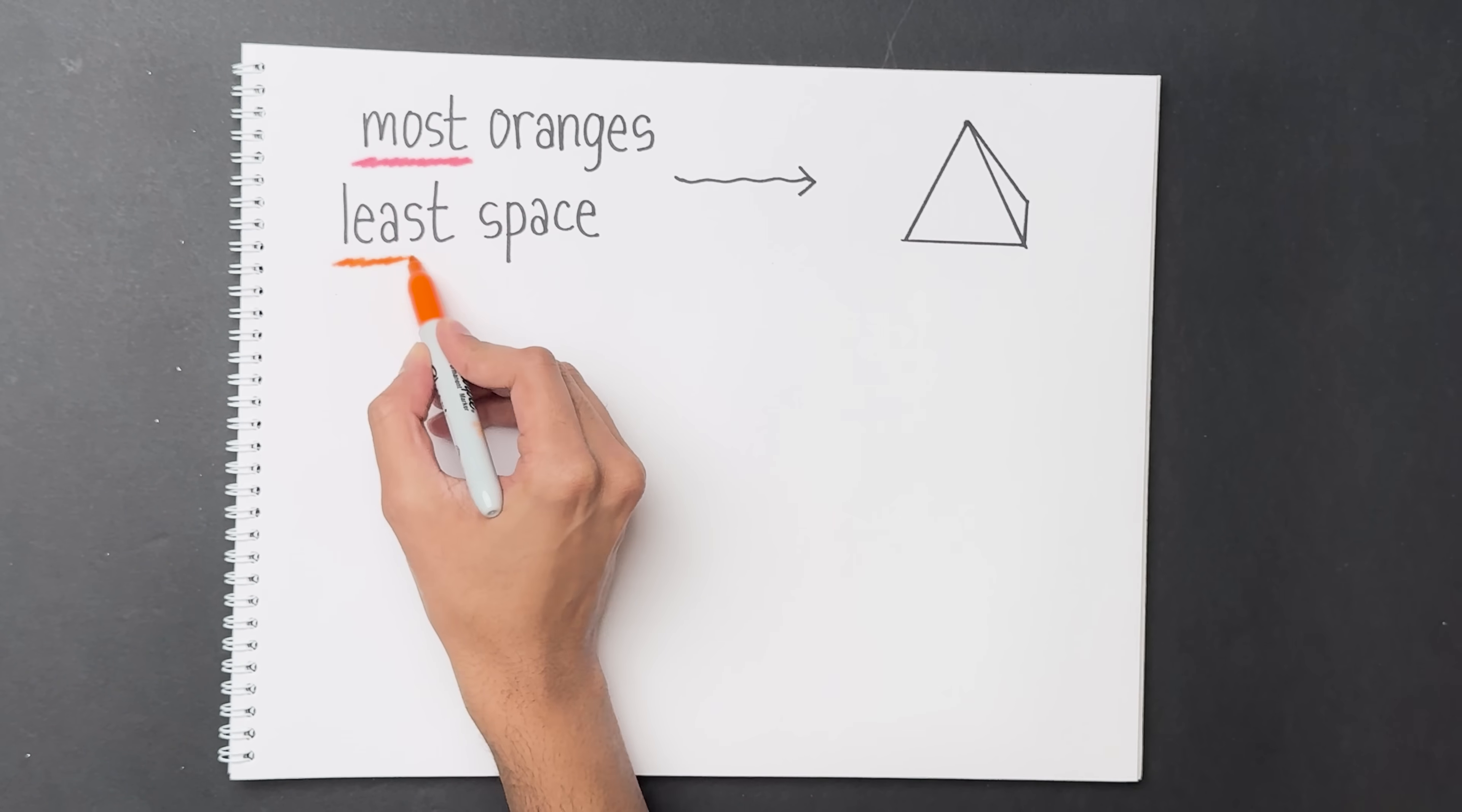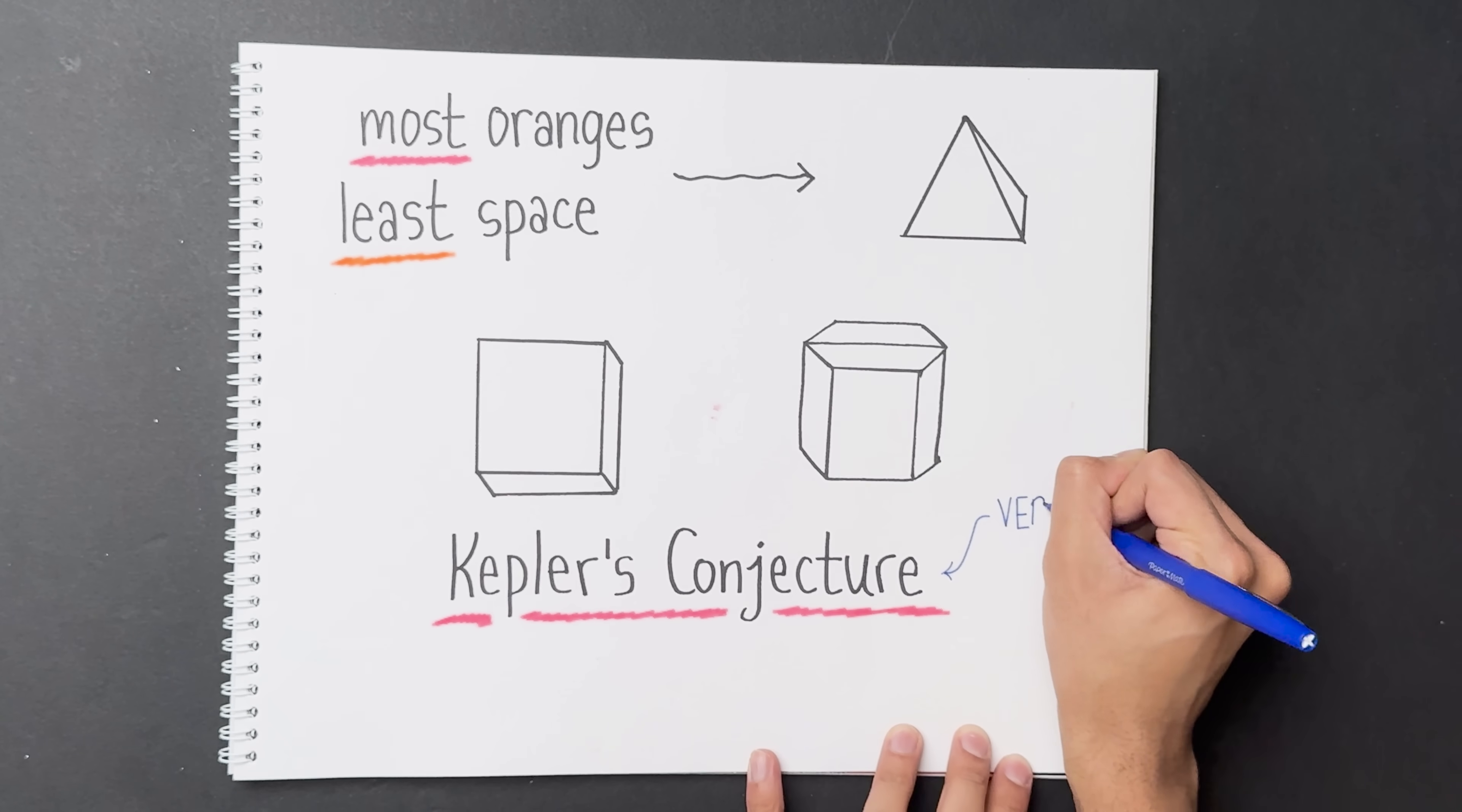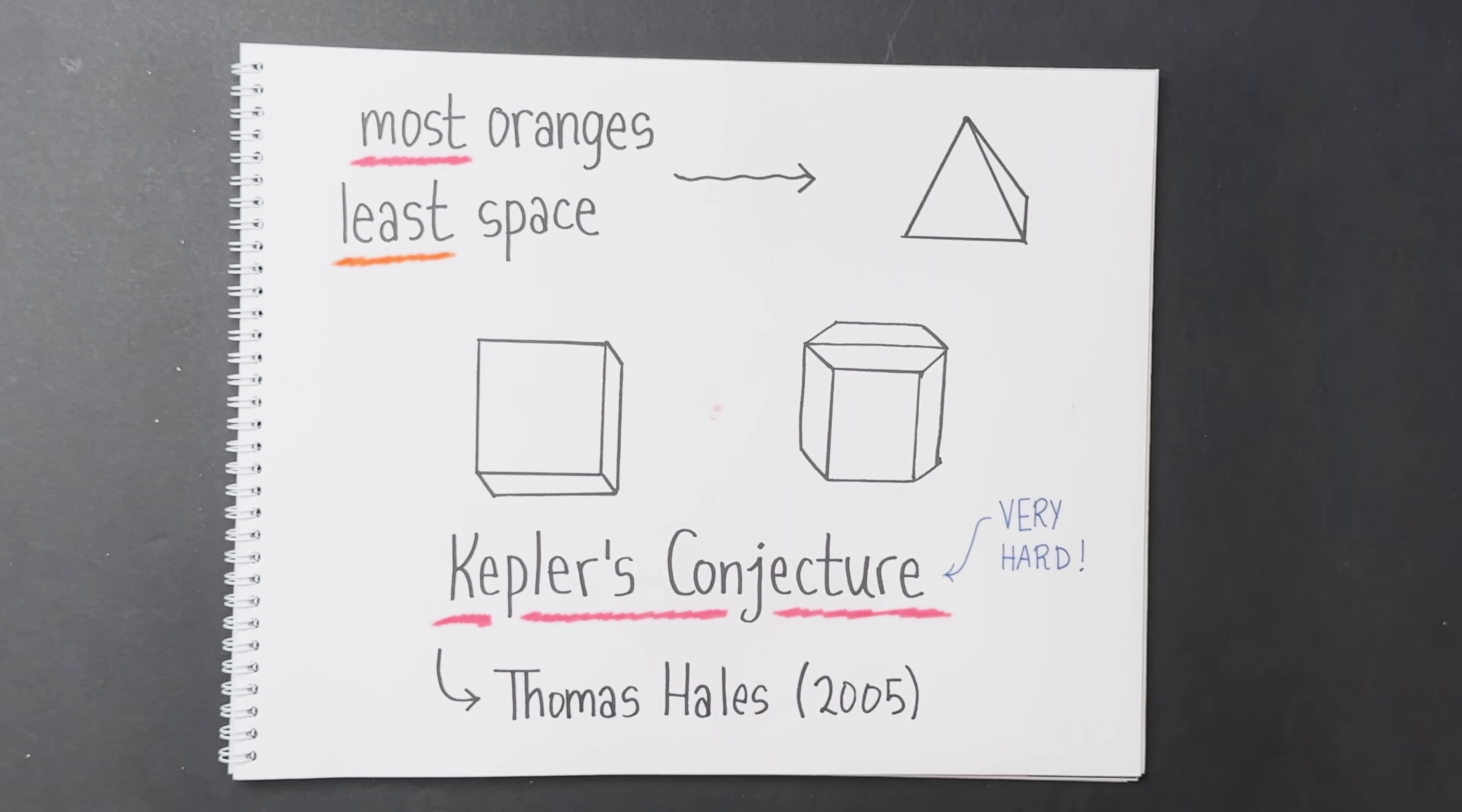Any other way of stacking them will be less efficient, say on the corners of a cube or on the corners of a weird hexagonal prism or anything like that. But how do we actually prove that this is true? The statement that the pyramid is the best packing is called Kepler's conjecture. This problem is very hard, and it was open for nearly 300 years. It was resolved just a few years ago by Thomas Hales in 2005.